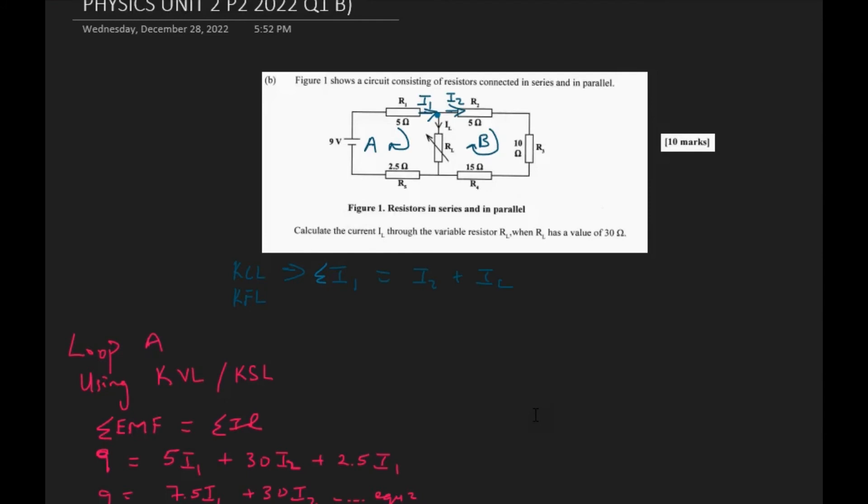Let's look at loop A. Using Kirchhoff's voltage law, sum of the EMF in a complete loop or one loop is equal to the sum of the voltage drop across each of the components. Because I only have one EMF in the circuit here, I just write 9 volts, and then I start off with my R1 resistor.